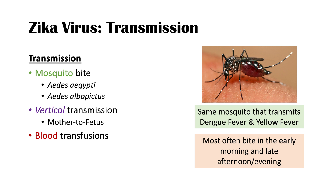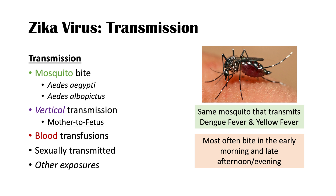Horizontal transmission — from one person to another — can occur through blood transfusions, sexually transmitted exposure, organ transplants, and laboratory contamination.